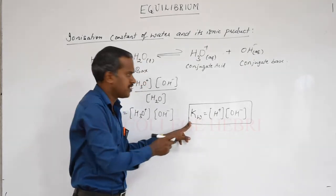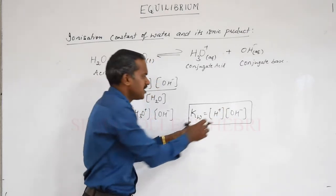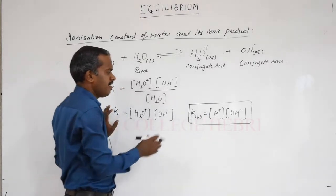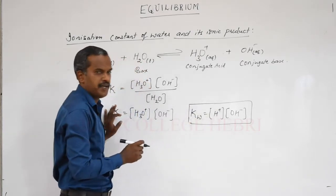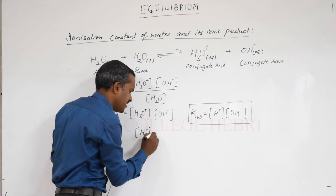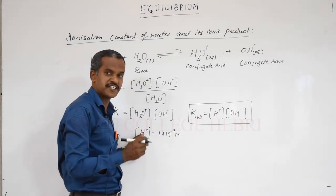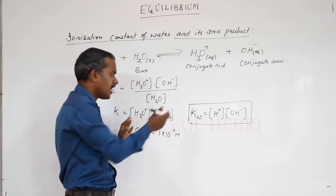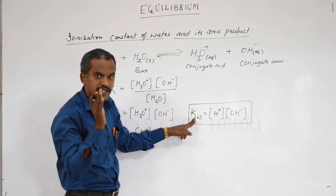Kw is the expression for ionic product of water — it is the concentration of H+ times concentration of OH−. Experimentally, the concentration of H+ ions is calculated and obtained as 1×10⁻⁷ molar, and the concentration of OH− is also the same. You must remember that the ionic product of water depends on temperature, and this value of 1×10⁻⁷ for H+ is at 298 Kelvin.